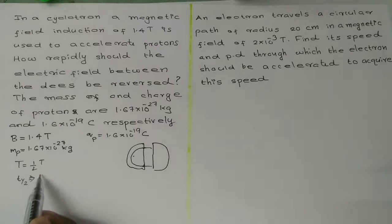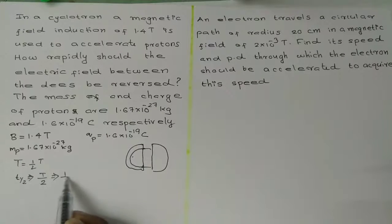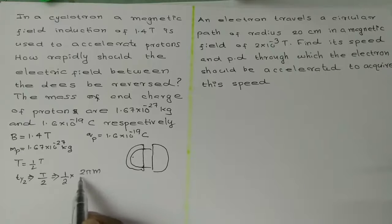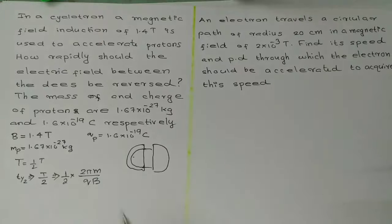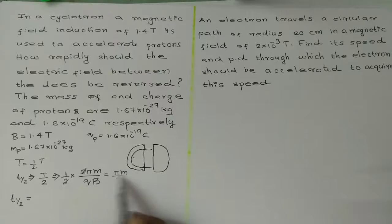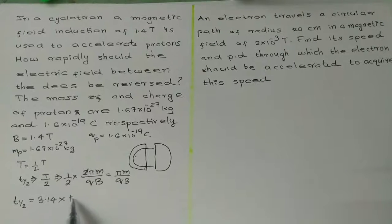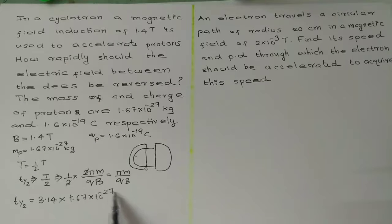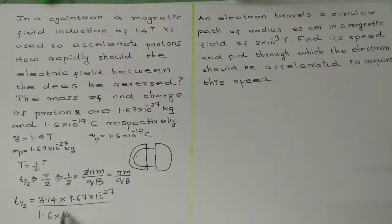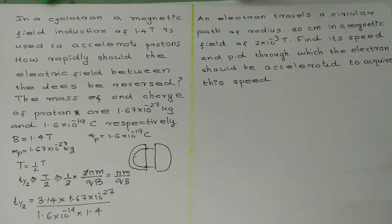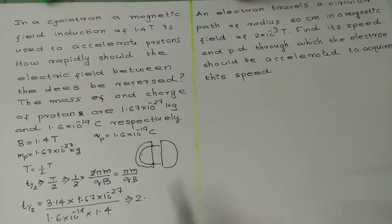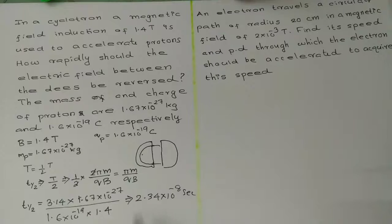The half time period t-half equals t/2. The time period is given by t = 2πm divided by qB. Therefore t-half = πm divided by qB. Substituting the values — with magnetic field 1.4 — and simplifying, we get 2.34×10⁻⁸ seconds.